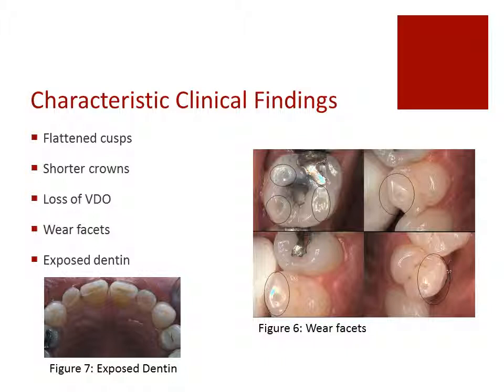Attrition may be localized to one tooth, or it may affect many teeth, but is often located in the anterior. In figure six, you'll note some wear facets on the posterior teeth. These are typically associated with the functional cusps, but are not limited to them. In figure seven, you'll note on the incisal surfaces and also on the premolars a loss of enamel and exposed dentin.